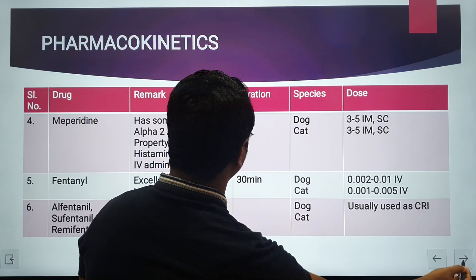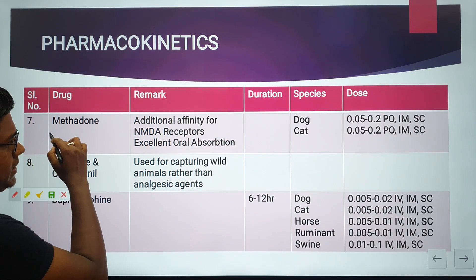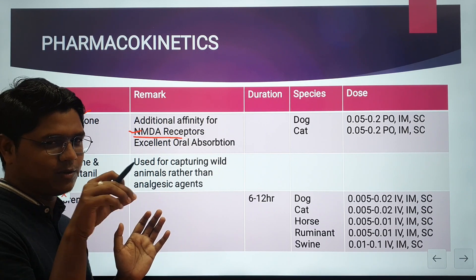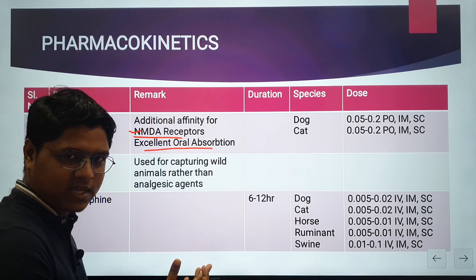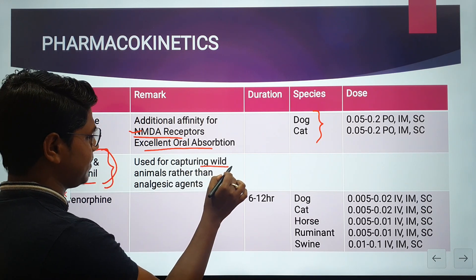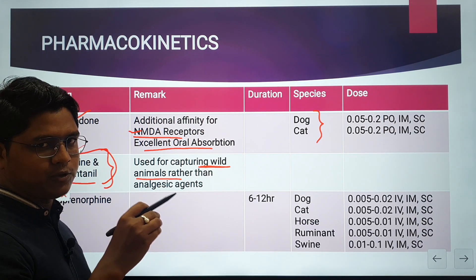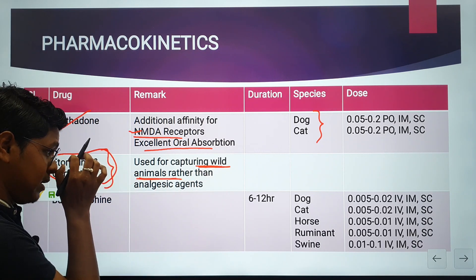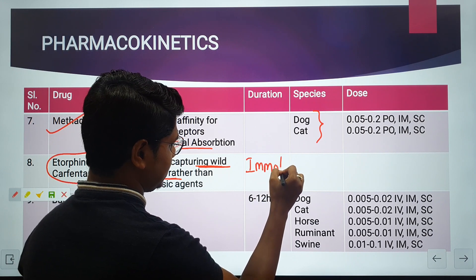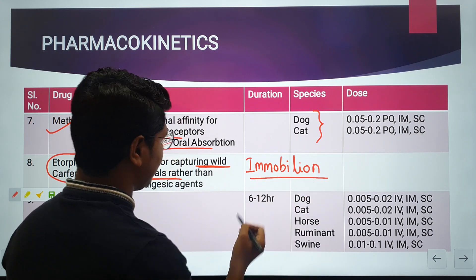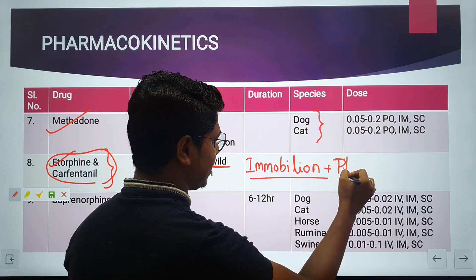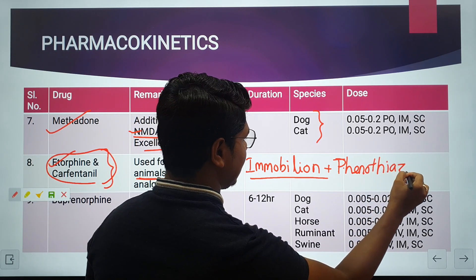Next is methadone, also an opioid. It has affinity for NMDA receptors and excellent oral absorption, which is why it can be given orally. It has been used in dogs and cats. Next, etorphine and carfentanil are used in wild animal capture, combined with other drugs to produce tranquilization or mild sedation — not primarily for analgesia. One product is Immobilon, used for capturing wild animals, containing etorphine along with a phenothiazine such as triflupromazine.